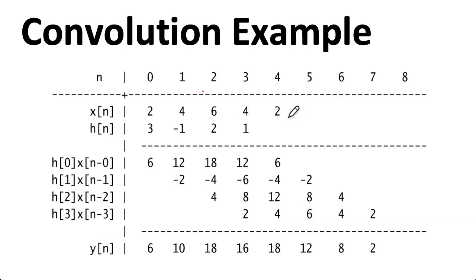Here's another example. We're taking x of n and shifting it one time unit to the right, moving down the rows. In the first row, we take x of n and multiply it by 3 to get 6, 12, 18, 12, 6. And to get the next row, we do the same thing except we multiply it by minus 1, etc., etc. And then summing along the columns here gives us our y of n.